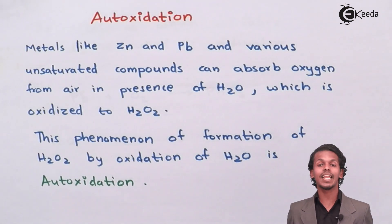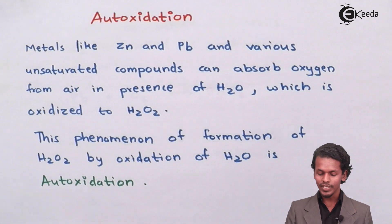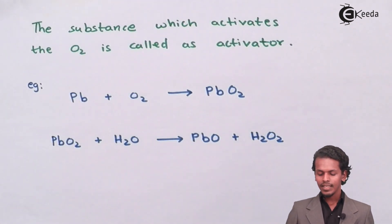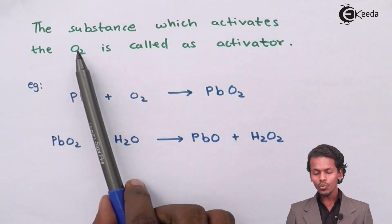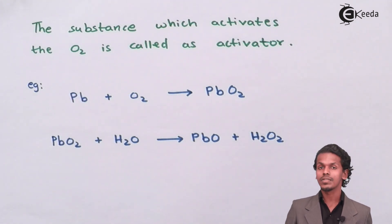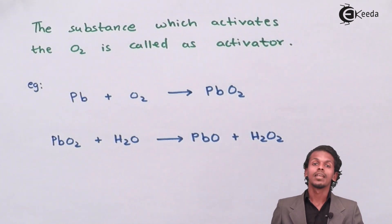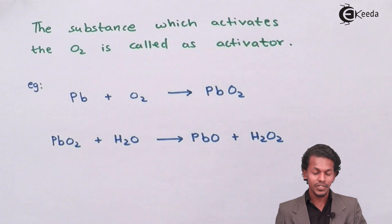In this case we have to oxidize a particular molecule. So for that I have given an example. In this case the O2 that is oxygen always used as an activator means without which oxidation cannot happen when we are talking about autoxidation.